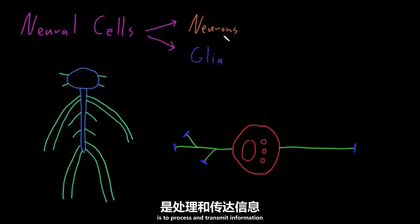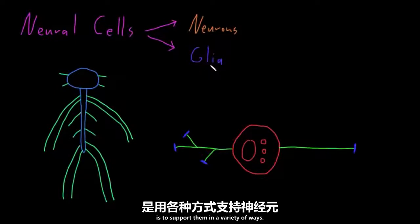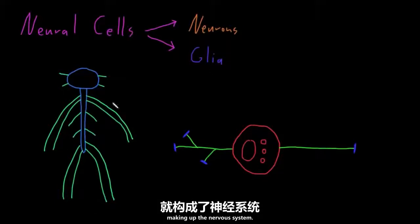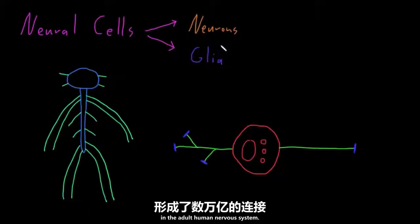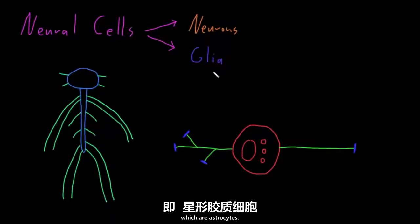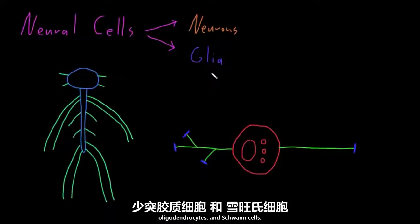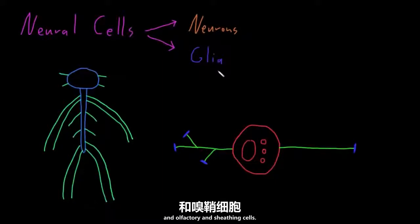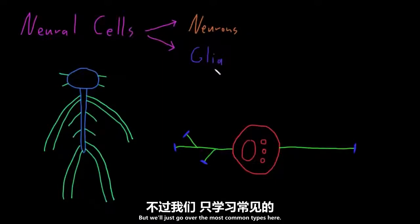The function of neurons is to process and transmit information, and the function of glia is to support them in a variety of ways. There are many structural and functional types of both neurons and glia, and there are large numbers of these cells — billions of neurons forming trillions of connections in the adult human nervous system, with even more glia than neurons. In subsequent videos, we'll go over the most common glia: astrocytes, microglia, ependymal cells, oligodendrocytes, and Schwann cells, as well as less common types such as satellite cells and olfactory ensheathing cells.